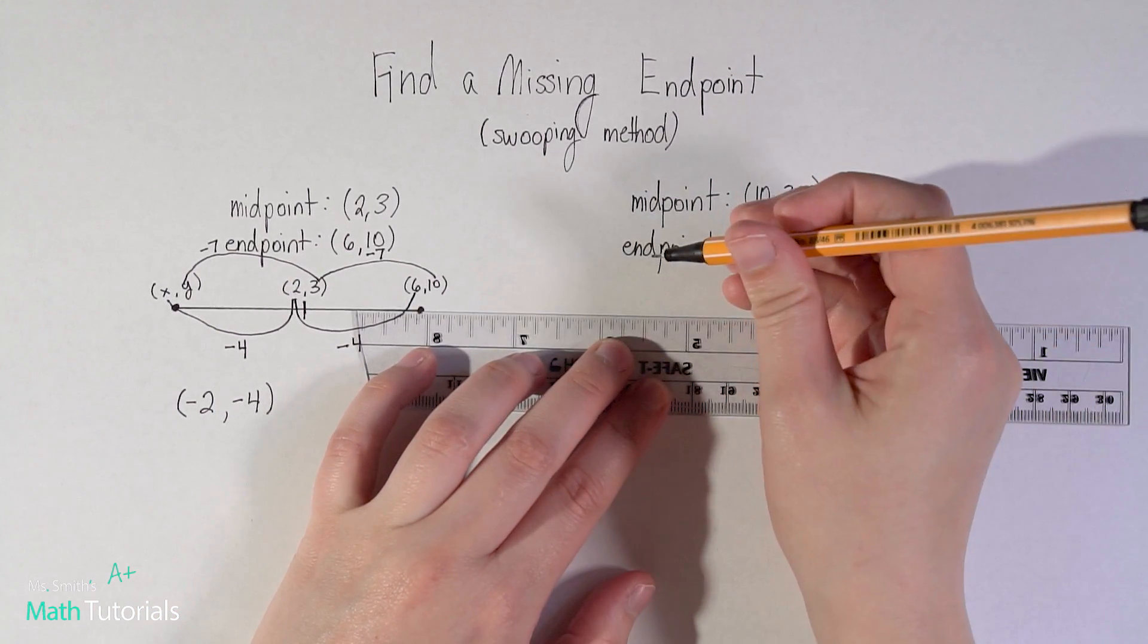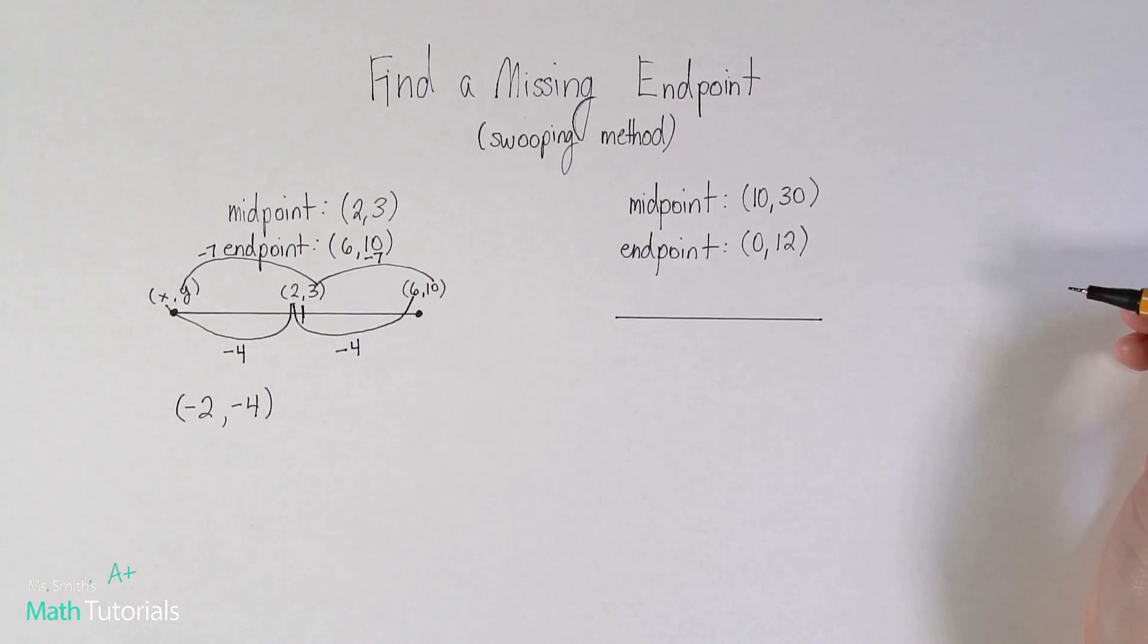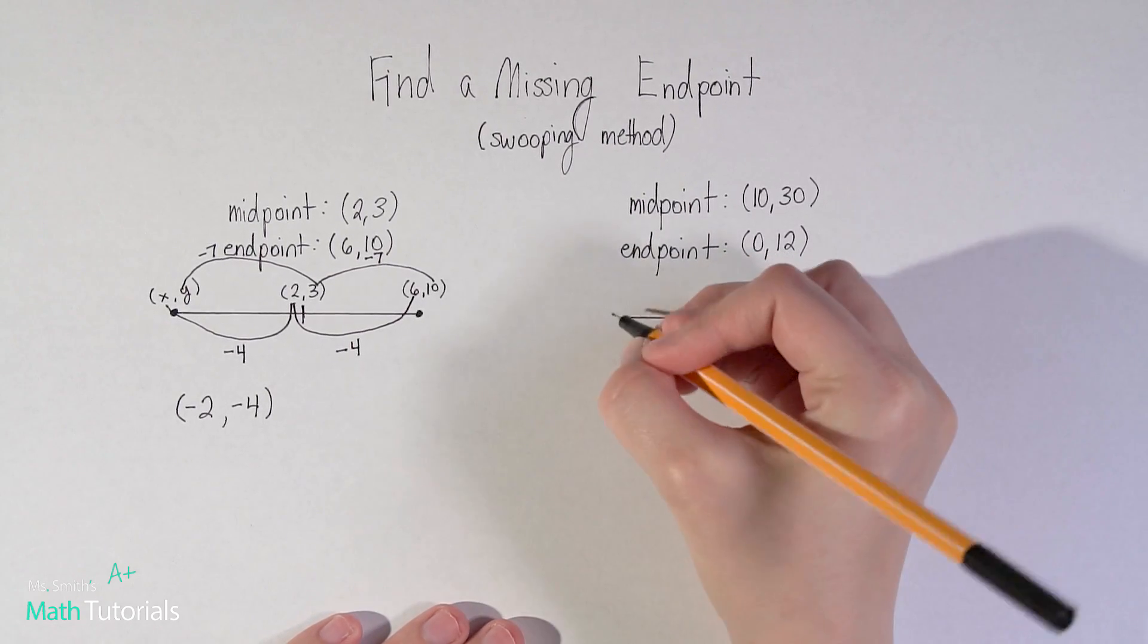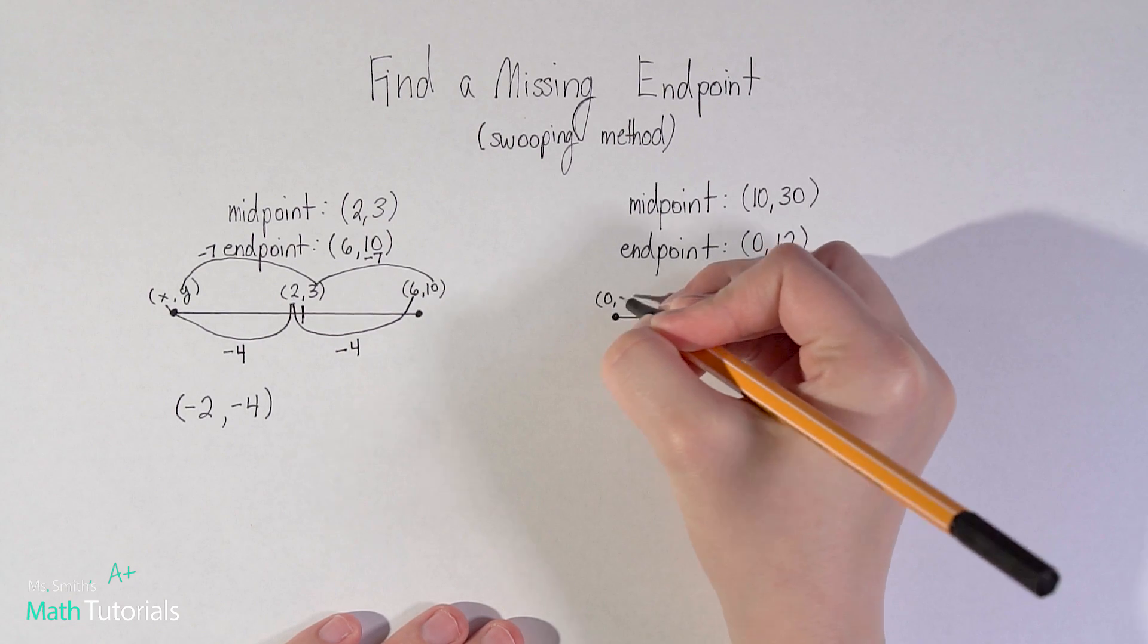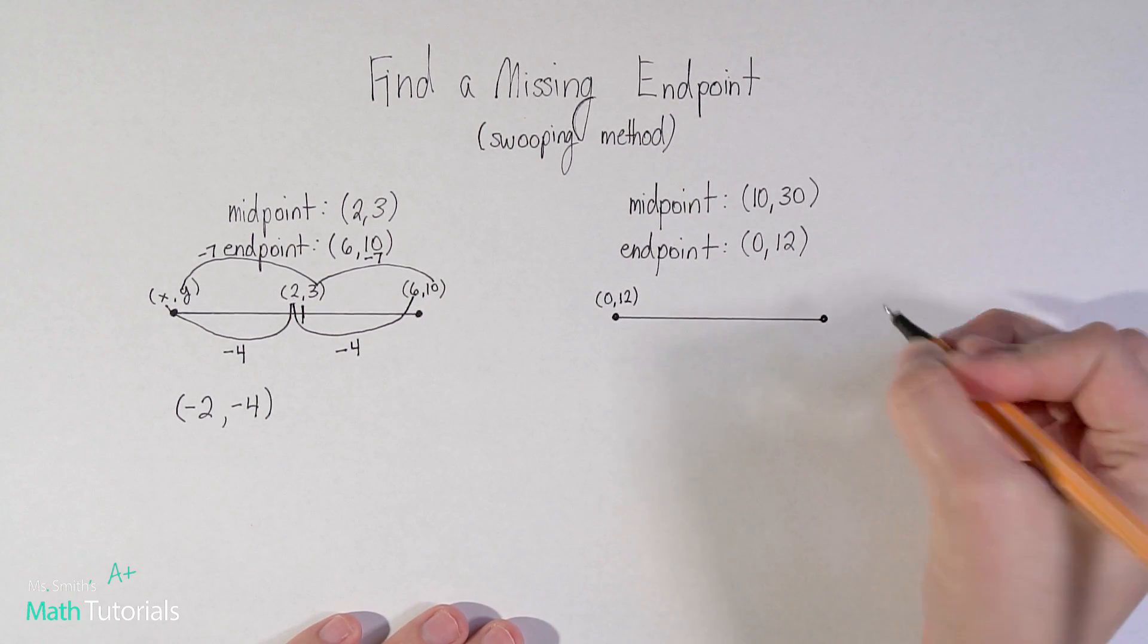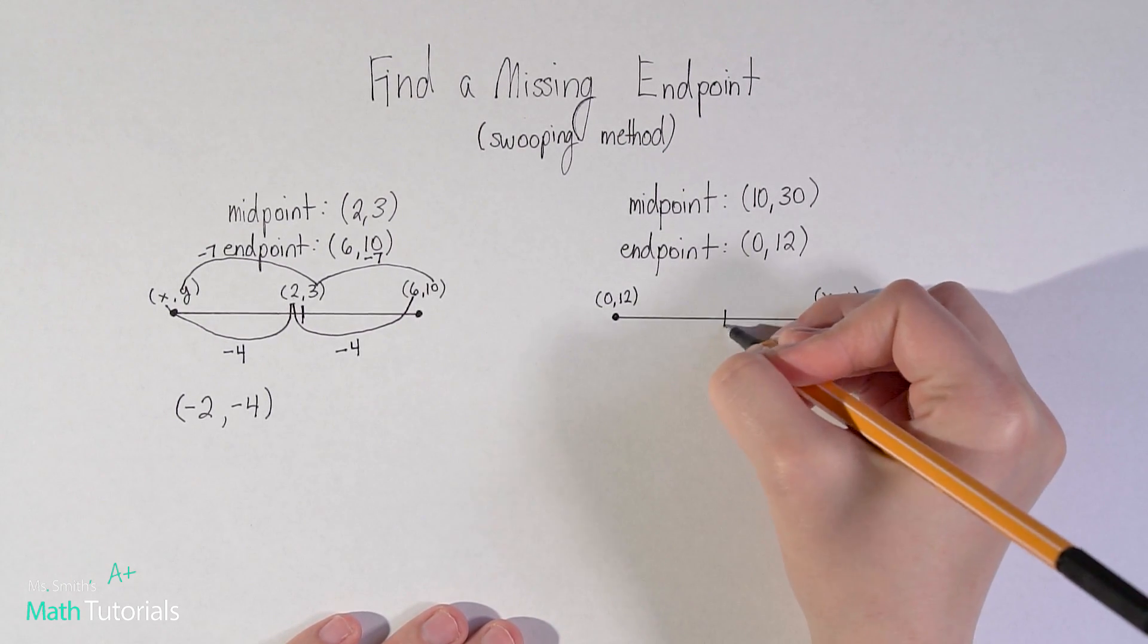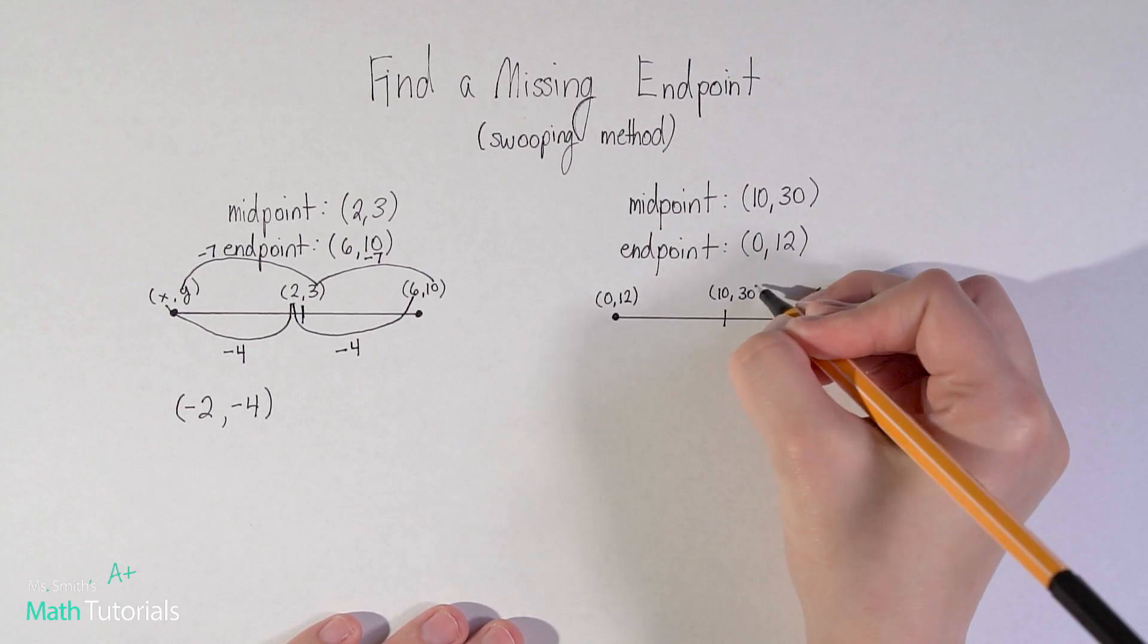We've got one endpoint, and I'll do the endpoint over here this time. It doesn't actually matter. We've got (0,12), and I've got my other endpoint over here that's the one I don't know, so I'll label it just (x,y). Then I've got my midpoint, and my midpoint they did tell me is (10,30).